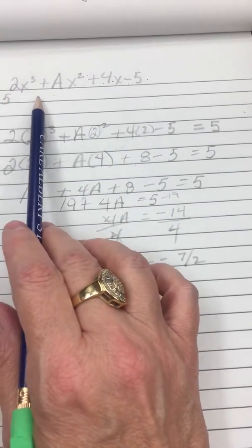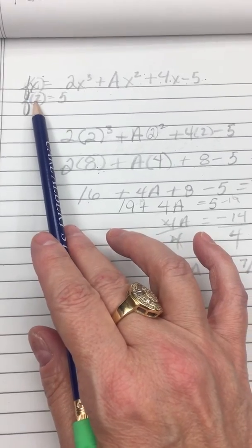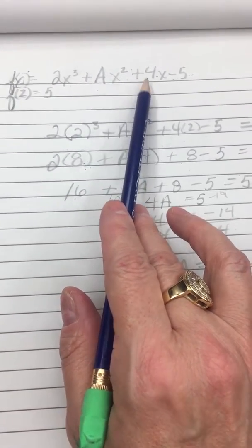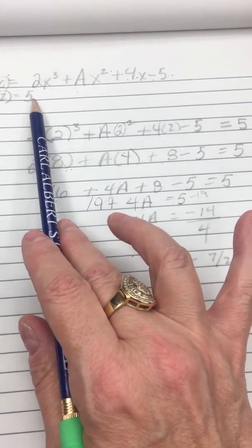Then all you need to do is go back in your original equation, substitute 2 everywhere that X is, and then set the whole equation equal to 5.